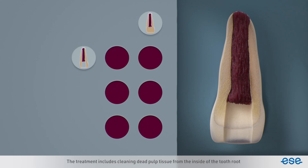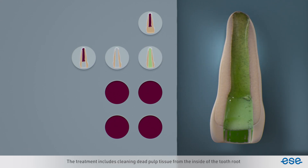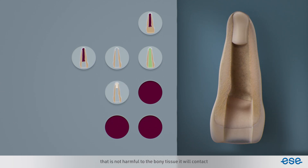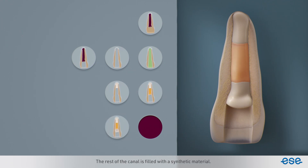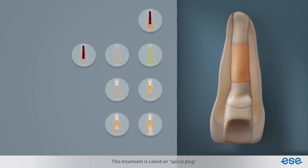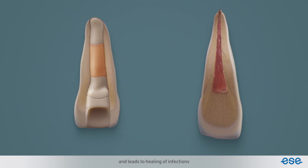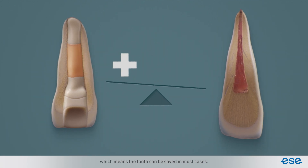The treatment includes cleaning dead pulp tissue from the inside of the tooth root and filling it with a special material that is not harmful to the bony tissue it will contact at the end of the root. The rest of the canal is filled with a synthetic material. This treatment is called an apical plug and leads to healing of infections, which means the tooth can be saved in most cases.